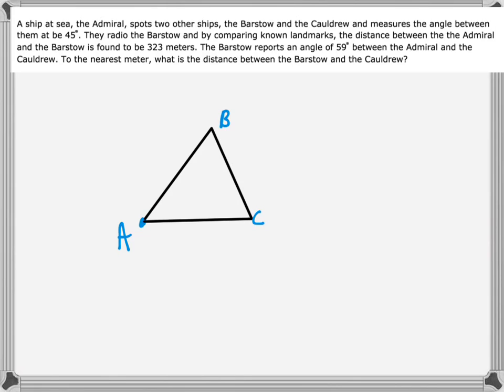The Barstow then measures the angle between the Admiral and the Cauldrew to be 59 degrees. So let's fill in what we know here. Between B and C is 45 degrees, it's 323 meters between A and B, and the angle between A and C is 59 degrees.